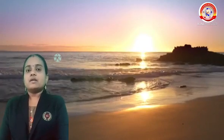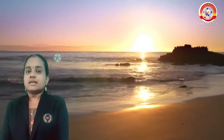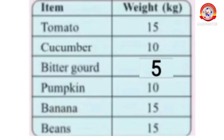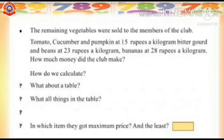Hello, my dear children. Welcome back to our today's mathematics class. In our previous class, we discussed the activity 'Harvest Time.' In this activity, we also discussed the weight of vegetables Harida Klep got and the weight of vegetables the Klep provided for the autumn feast. Today we are going to discuss the remaining portion of this activity. The remaining vegetables were sold to the members of the club — tomato, cucumber, and pumpkin at 15 rupees a kilogram; bitter gourd and beans at 23 rupees a kilogram; bananas at 28 rupees a kilogram. How much money did the club make?